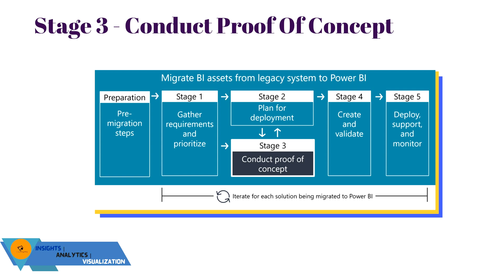Before migrating your legacy systems to Power BI, you need to conduct a proof of concept so that you can prove that the system you are going to design is going to work. A technical POC is helpful for validating assumptions, and it can be done iteratively alongside solution deployment planning, which is Stage 2.